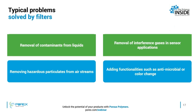Let's look at some of the typical problems solved by Porex filters across different applications and industries. One is the removal of contaminants from different types of liquids — it could be water, it could be fuel. You could also remove interference gases in sensor applications, remove hazardous particulates from air streams, or add functionalities such as antimicrobial properties or color change. There are different types of solutions based on the application or need that Porex can provide.